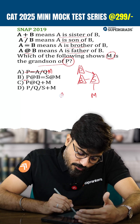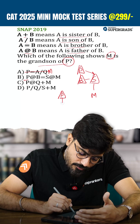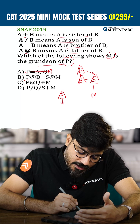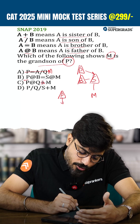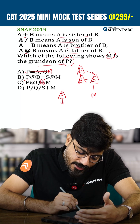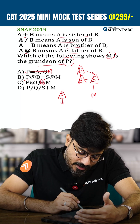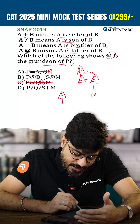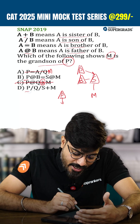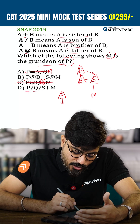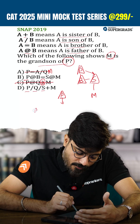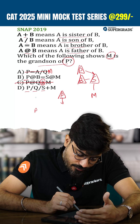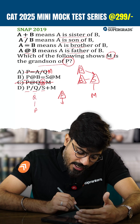Now looking at option C: P @ Q means P is the father of Q, but here it should be '@' for M to be the grandson — so this is not the answer.